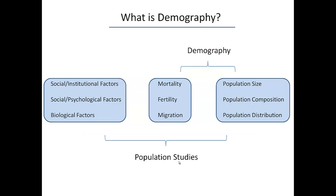Some social scientists make a distinction between demography, as the study of the formal population processes and outcomes, and population studies, which also include the factors affecting or affected by population processes. I don't really make a distinction, and tend to use the terms interchangeably.